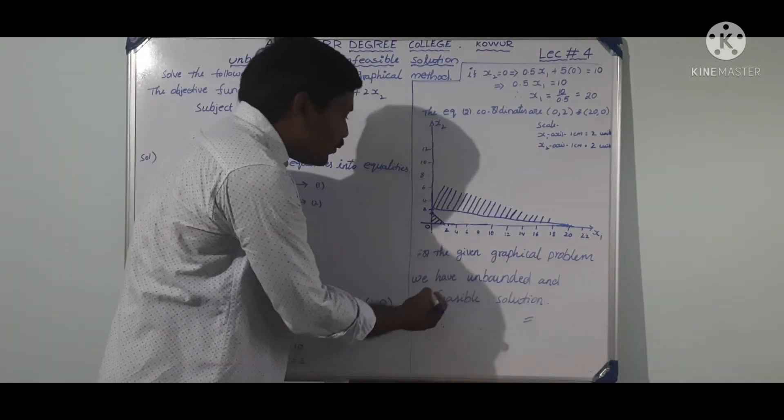As per the scale data, the x1 maximum value is 20 and x2 maximum value is 2. On the x1 axis, 1 cm equals 2 units, and on the x2 axis, 1 cm equals 2 units.